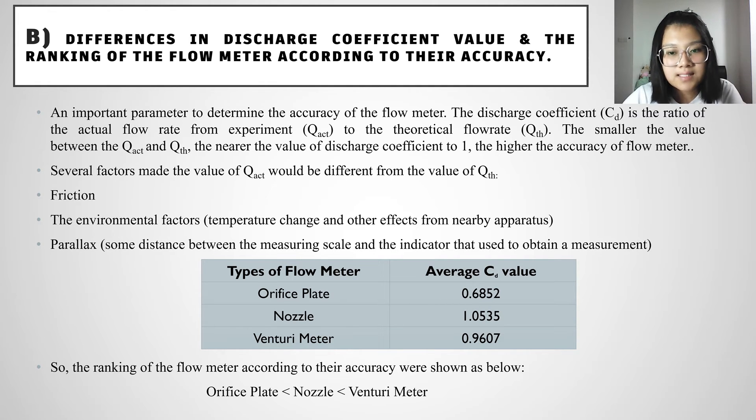From this data that we get, we can know that the venturi meter average CD value was the nearest to 1. This means that the venturi meter was the most accurate flow rate if we compare with the orifice plate and also the nozzle.